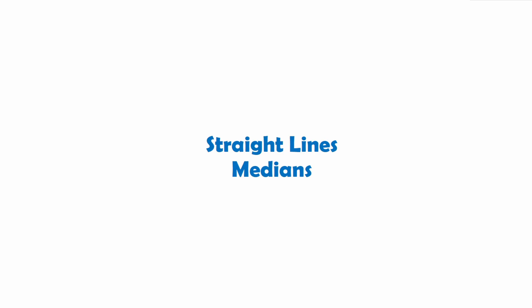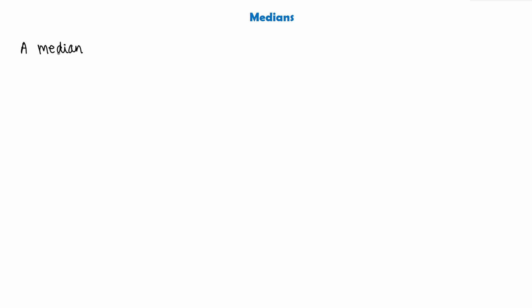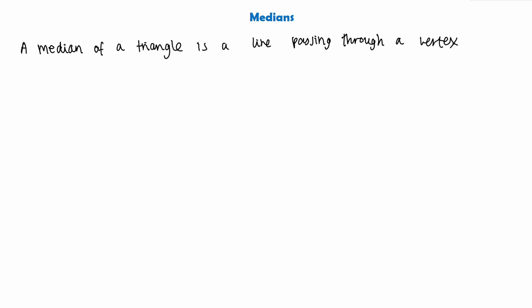In today's video we are going to be continuing our topic on straight lines, and today we're going to look at medians. So what is a median? We'll start off by defining what the word median actually means. A median is the name of a particular line, and we say that a median of a triangle is a line passing through a vertex — which is the corner of a triangle — and the midpoint of the opposite side.